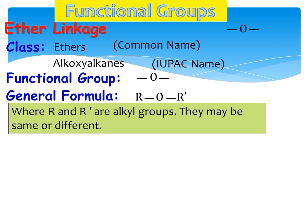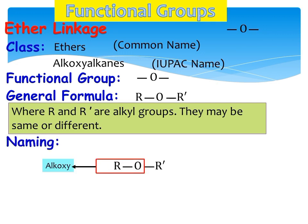When the R groups are different, you follow alphabetical order when suggesting the common name. One R group is joined with the oxygen and called 'alkoxy,' and the other R group is named simply as 'alkane.'